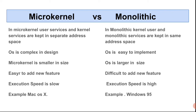Microkernel is smaller in size — because it creates its own connections, its size is very small. Monolithic kernel operating system, by contrast, is very large in size.